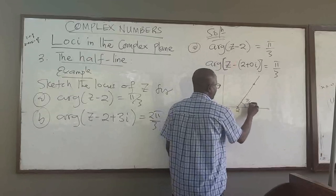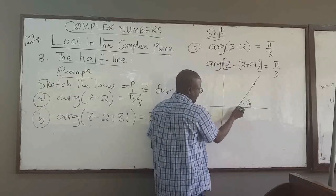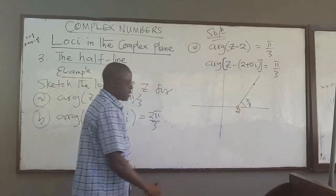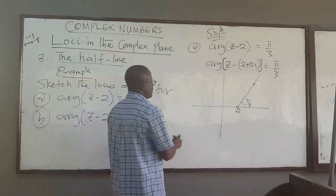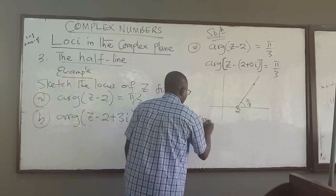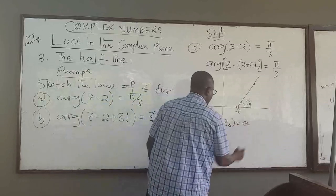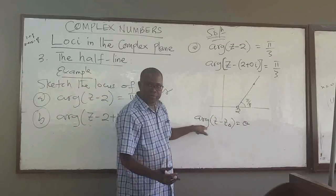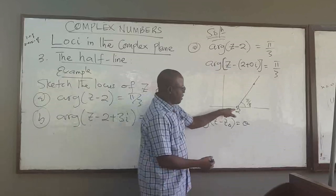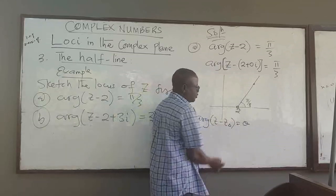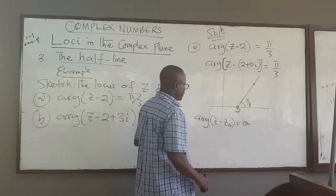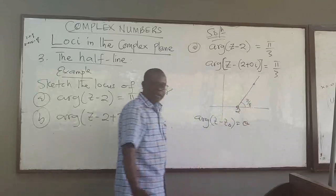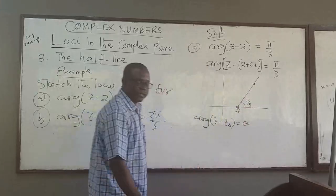This angle is pi over 3. Note that the point 2 itself is not included — z naught is not part of the locus. Why? Because if z equals z naught, then we are looking for the argument of zero, which is undefined. So we put an open circle at z naught to indicate that the point itself is not part of the locus. Any point along this half line making angle pi over 3 is in the locus.